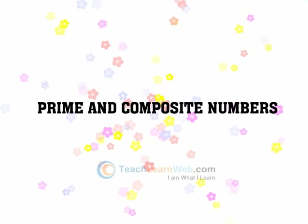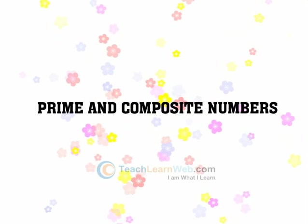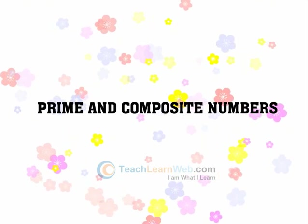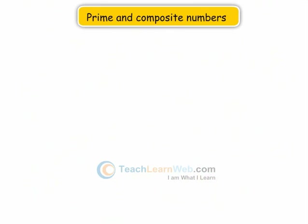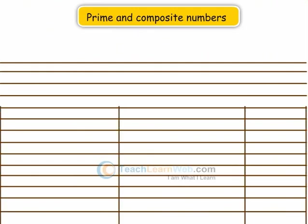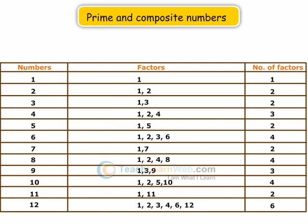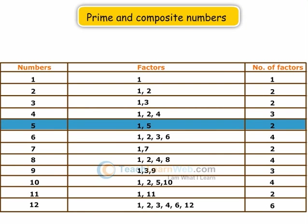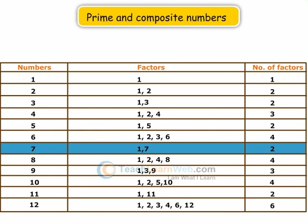Prime and Composite Numbers. In the above table, there are numbers having exactly two factors — 1 and the number itself. Such numbers are 2, 3, 5, 7, 11, and so on.